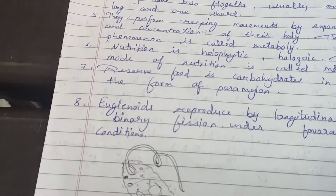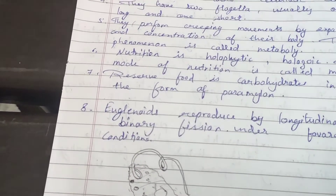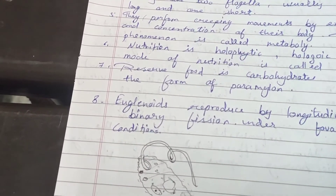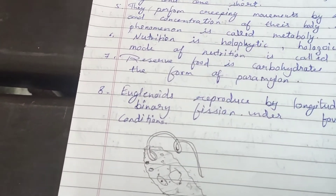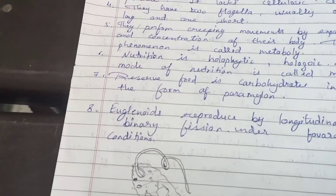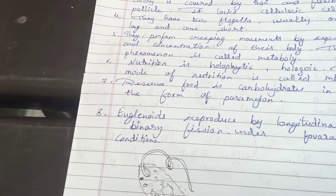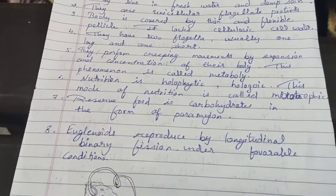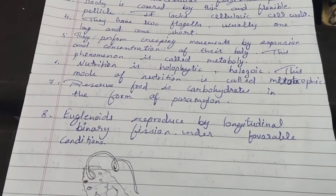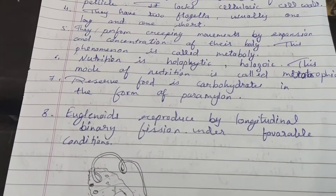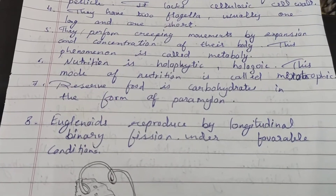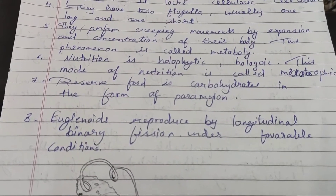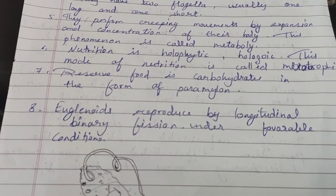Euglenoids are important to talk about because they serve as a connective link between protista, monera, and multicellular organisms.